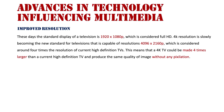Essentially, 4K is approximately double high definition in both height and width in terms of pixels on screen. That's how we get 4 times the overall size, and I'll display that in a second. What this also means is that a 4K TV could be made 4 times larger than a current HD TV and produce the same quality image, and I'll illustrate that now.